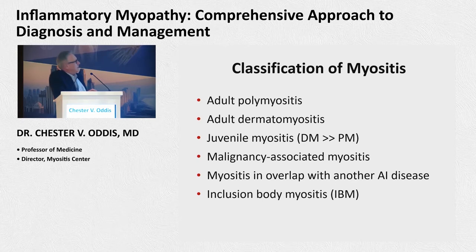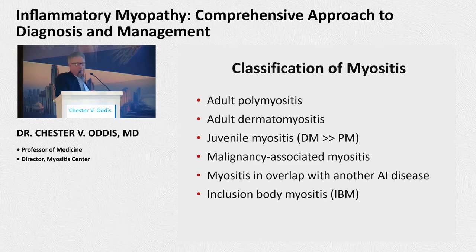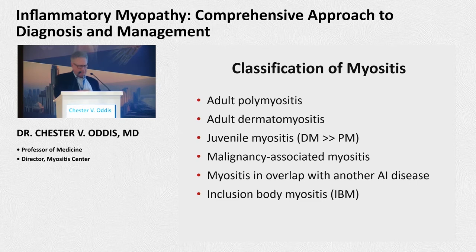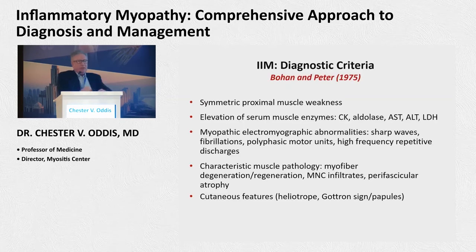This is the classification of myositis that many of us grew up on. Myositis is interesting because right in the classification we have a juvenile subset. Dermatomyositis predominates over juvenile polymyositis. These are old diagnostic criteria — the Bohan and Peter criteria from 1975.